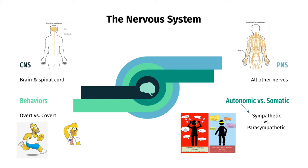The central nervous system, CNS, which includes the brain, protected by the skull, and your spinal cord, protected by your spine. And the peripheral nervous system, PNS, which is the rest of the nerves that connect to all over the body.